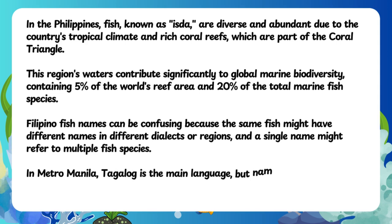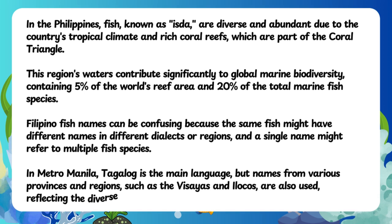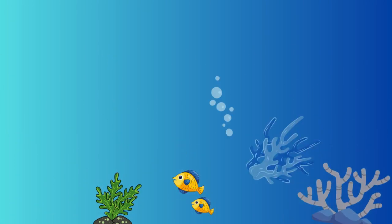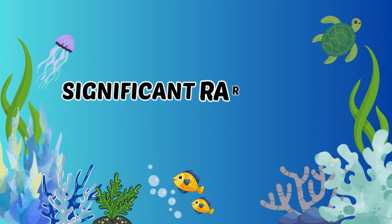In Metro Manila, Tagalog is the main language, but names from various provinces and regions, such as the Visayas and Ilocos, are also used, reflecting the diverse origins of the city's population. Significant rare species — let's use the map to show these different varieties.